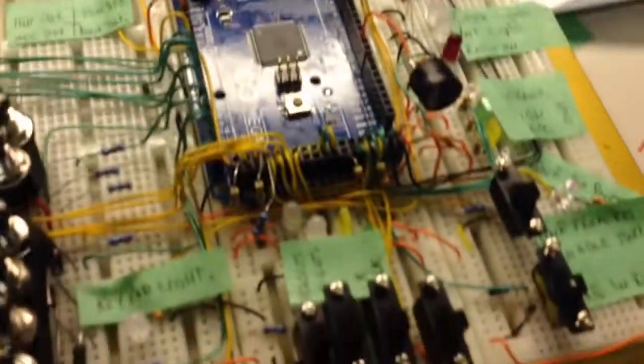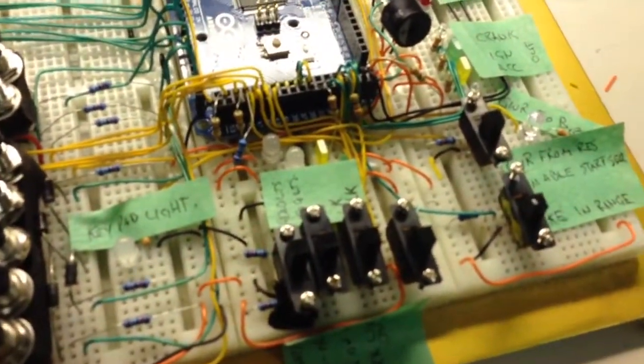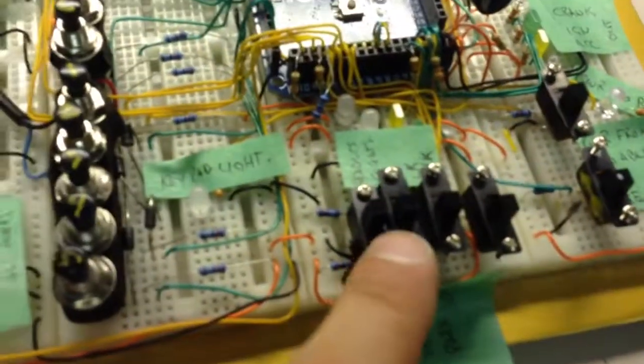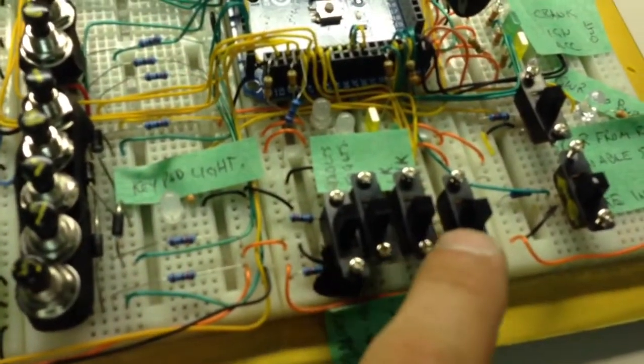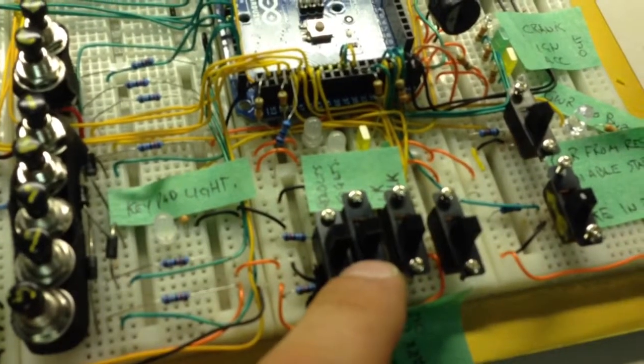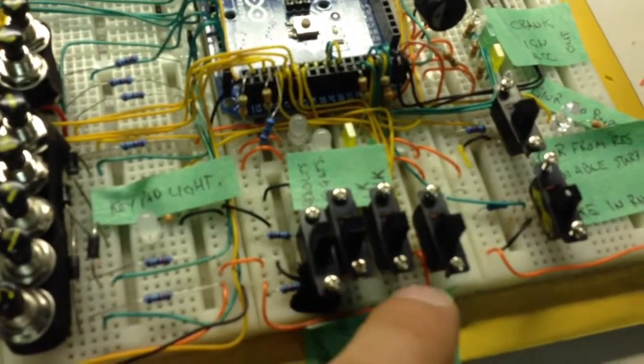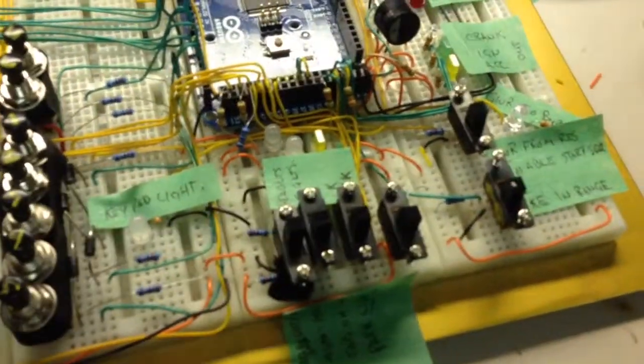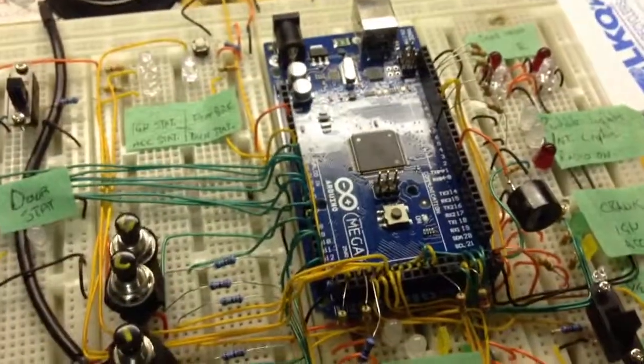But this is just our test mock-up to make sure that all the programming is going to be correct. This is also controlling our headlights and fog lights. When the vehicle starts, I want certain things to happen with the headlights and the fog lights, and this unit is going to control that for us.